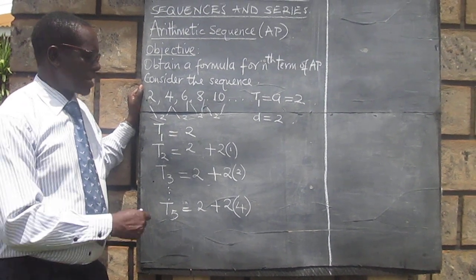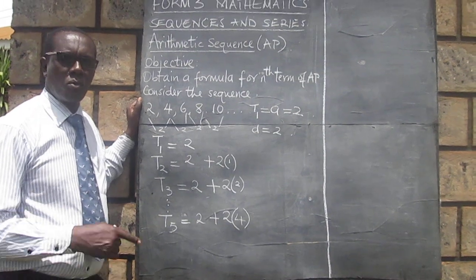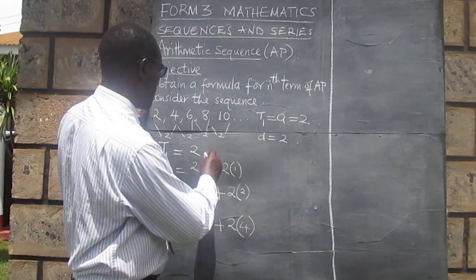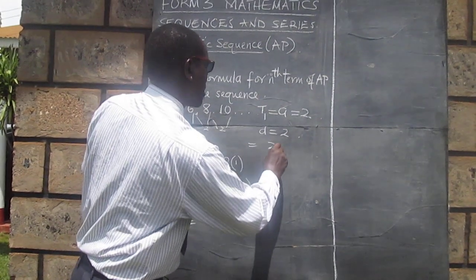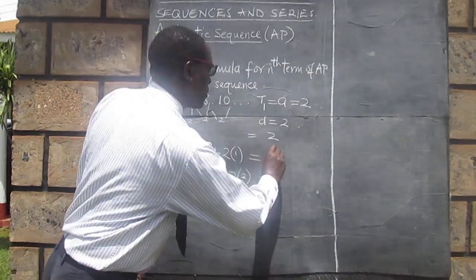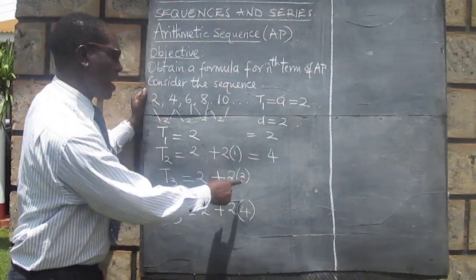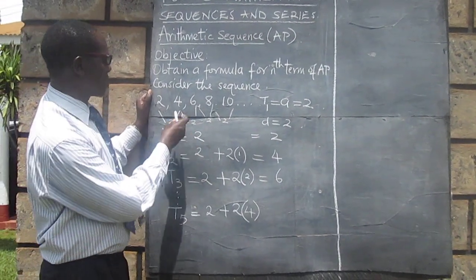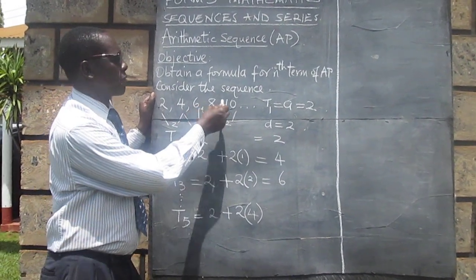We can therefore get any term we want with the same argument. Remember the terms we had in the sequence here. The first term was 2, the second was 4, the third was 6. The fifth, let's look at the fifth term: 1, 2, 3, 4, 5. The fifth term was 10.